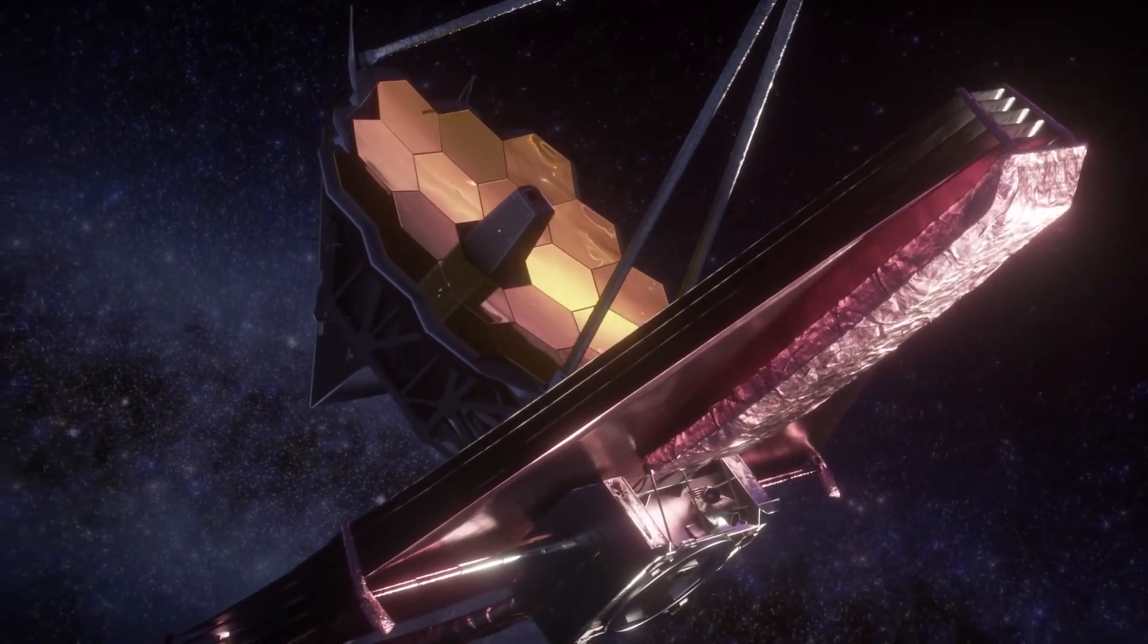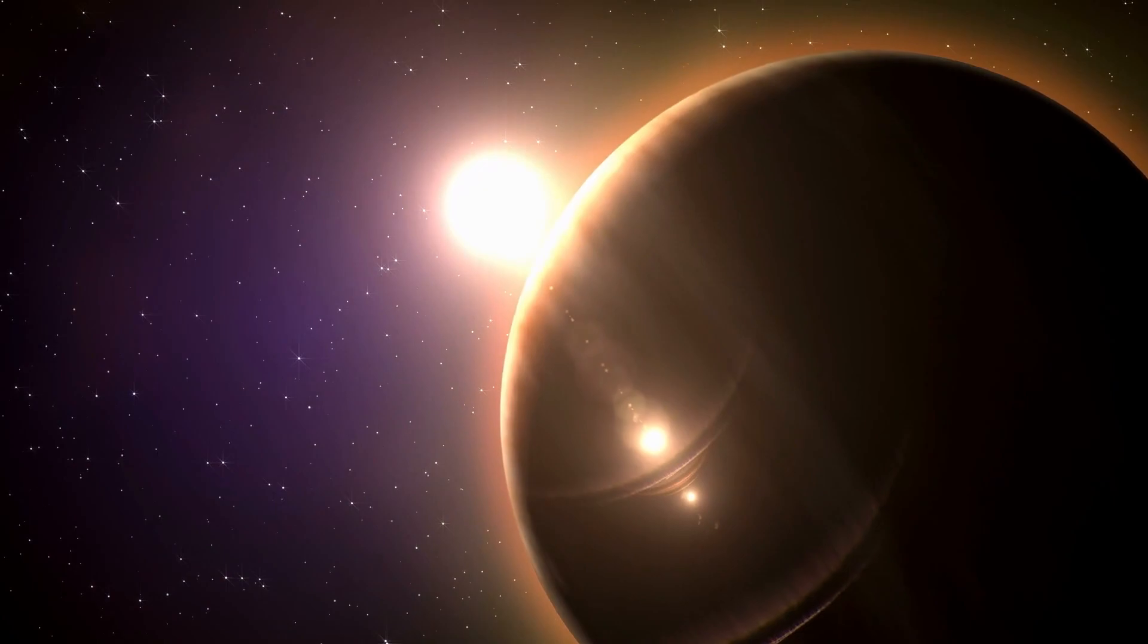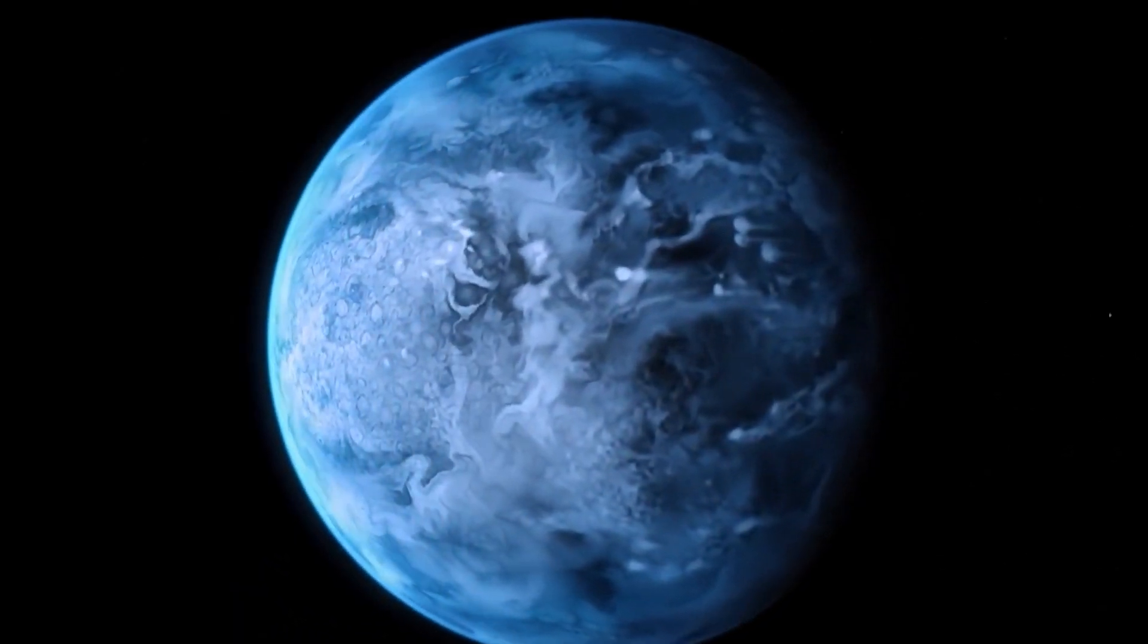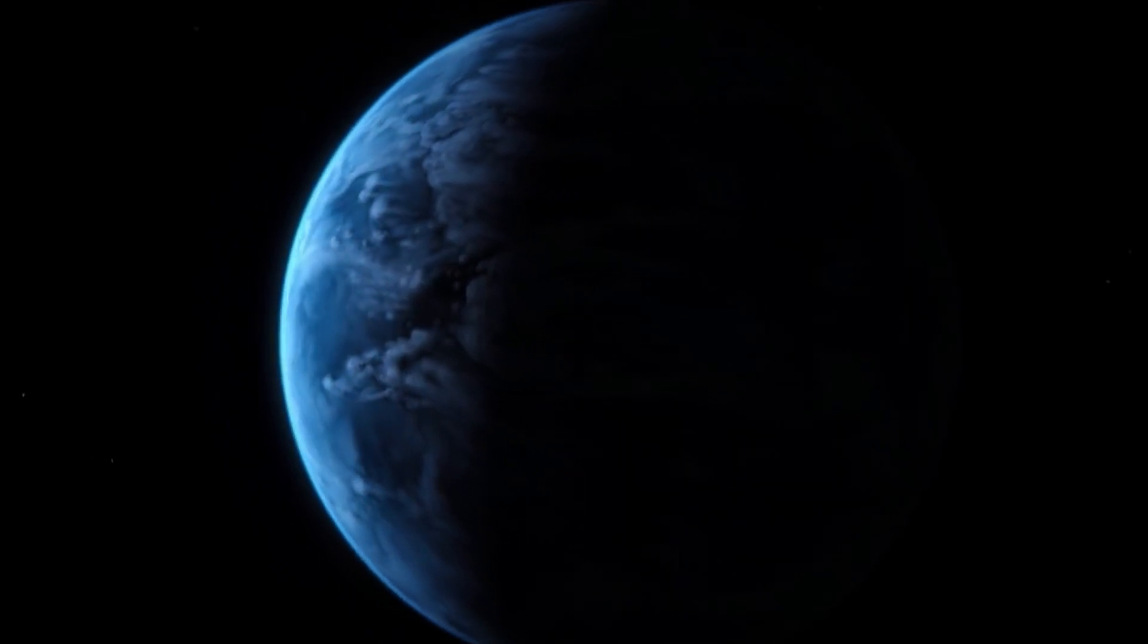The discovery came when the JWST was observing gas giants and exoplanets in distant solar systems. Now, the Webb has been observing these parts for a long time, and a few months prior found the first unequivocal sign of water vapor in the region.